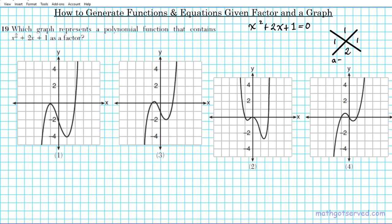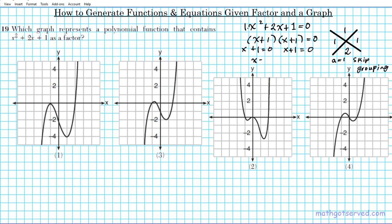In this particular problem, A equals 1 — the leading coefficient is 1. So in this case, we can skip the grouping process and jump right to the factored form. That is simply going to be x plus one times x plus one, which equals zero. Setting each factor equal to zero gives us x equals negative one with a multiplicity of two.